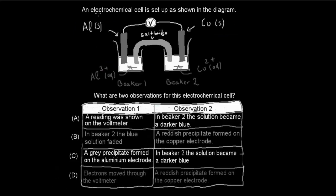The next question: an electrochemical cell is set up with an aluminium electrode in an Al³⁺ solution and a copper electrode in a Cu²⁺ solution, connected by a salt bridge. What are two observations for this cell? A: a reading on the voltmeter, and in beaker 2 the solution became darker blue. B: in beaker 2 the blue solution faded, and a reddish precipitate formed on the copper electrode. C: a grey precipitate formed on the aluminium electrode, and beaker 2 became darker blue. D: electrons move through the voltmeter, and a reddish precipitate formed on the copper electrode.